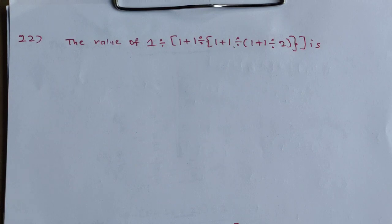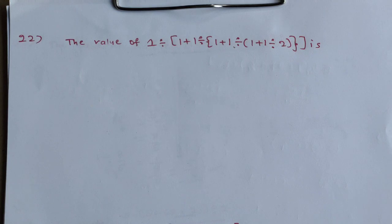Hi friends, welcome to Raman Education Academy. Simplification Law question 22: find the value of 1 divided by 1 plus 1 divided by bracket 1 plus 1 divided by bracket 1 plus 1 divided by 2, bracket close.